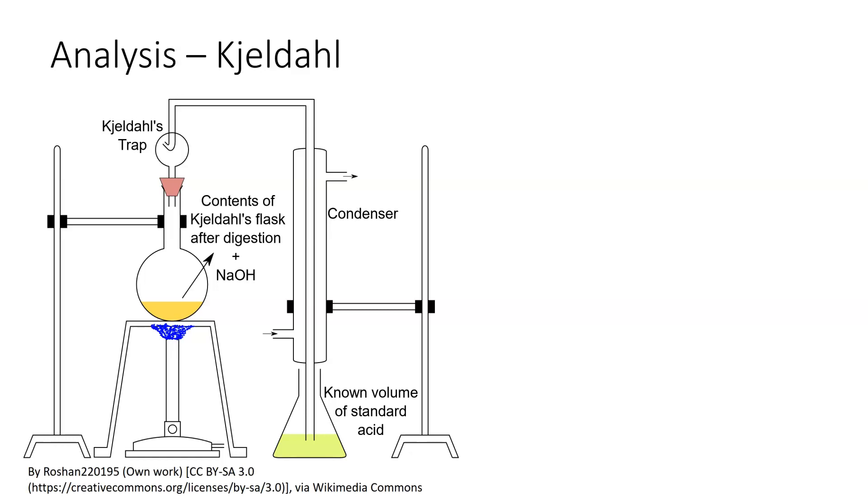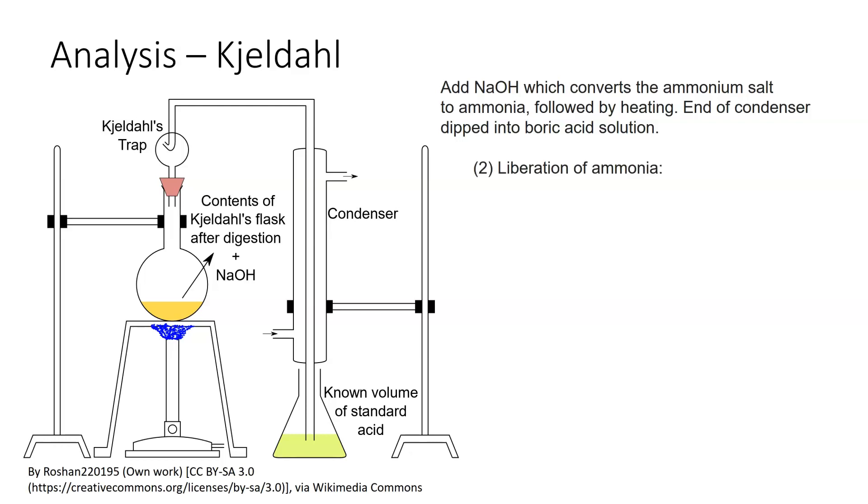Anything that is produced has to bubble out slowly through the acid so that it can be picked up. Procedures add sodium hydroxide which converts the ammonium salt to ammonia followed by heating. The end of the condenser is dipped into the boric acid solution. We get the liberation of ammonia. This is done because the ammonium sulfate plus the sodium hydroxide will give you sodium sulfate plus ammonia gas.